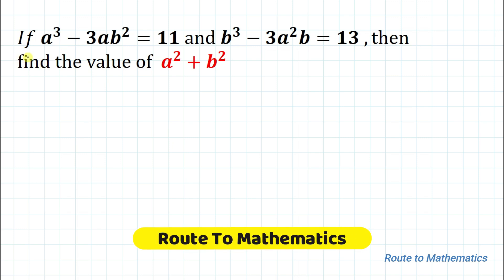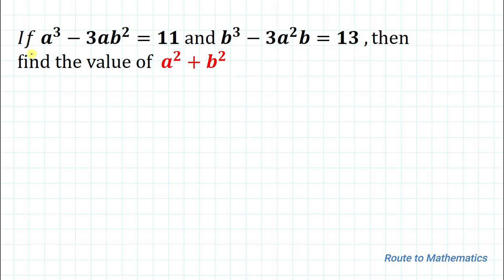Hello everyone, welcome to Root 2 Mathematics. In this video we are going to solve an interesting Olympiad question. The given question is: if a³ - 3ab² = 11 and b³ - 3a²b = 13, then find the value of a² + b². We have two equations, and we are asked to find the value of a² + b². So without any delay, let's start the solution.